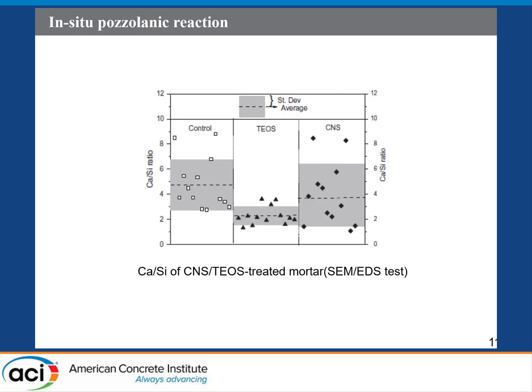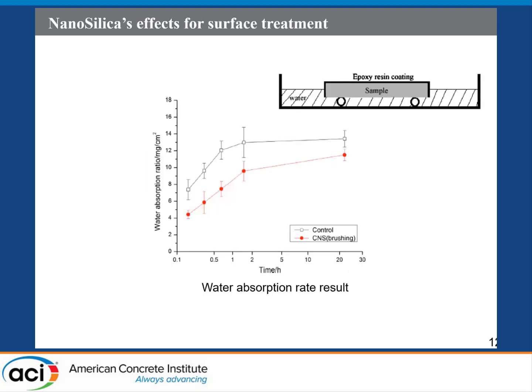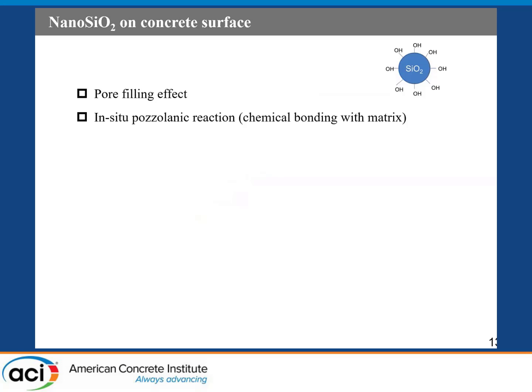Some chemical reactions happen and reduce the calcium-to-silicon ratio — for example, changing the CSH gel chain length, something like that. For the micro property measurement, water absorption rate reduction can also be seen. This could be the result of the pozzolanic reactivity of the material. So the small conclusion is that by using the nanomaterials, the pozzolanic effect and the pozzolanic reaction provide chemical bonding with the matrix.